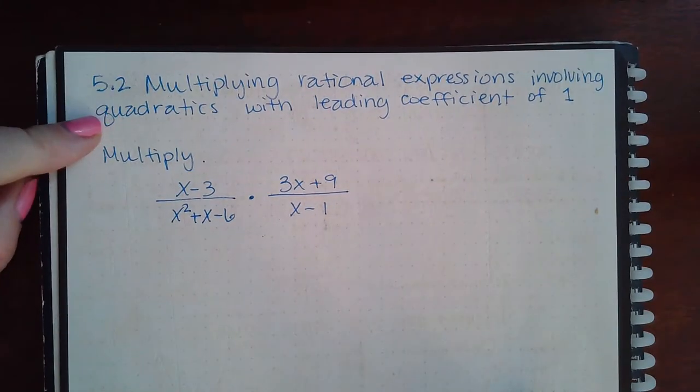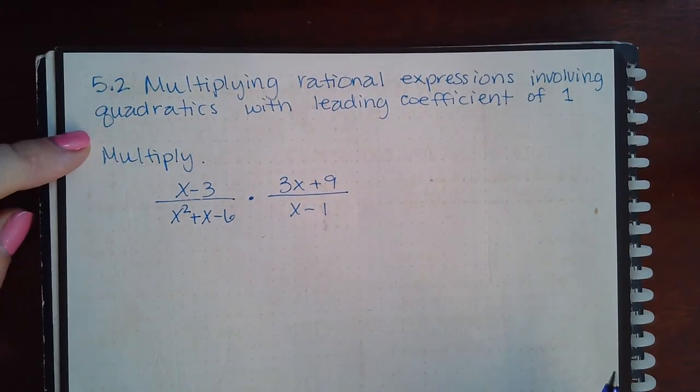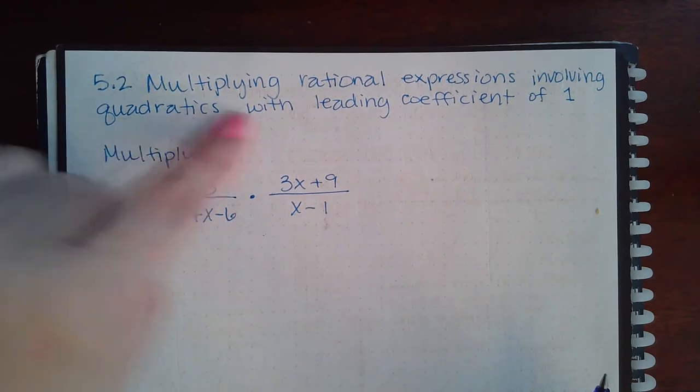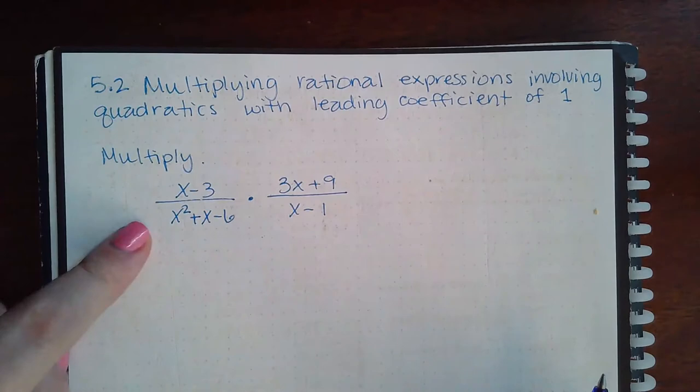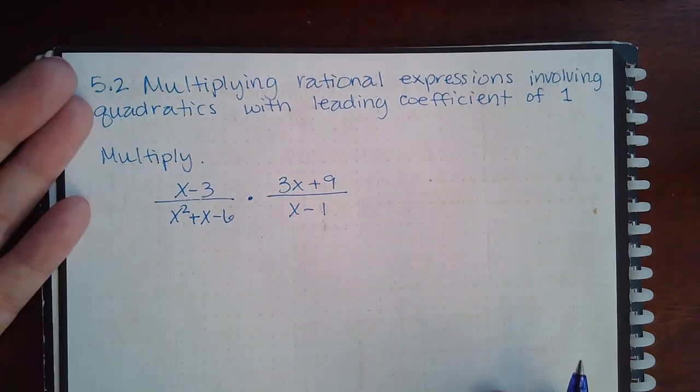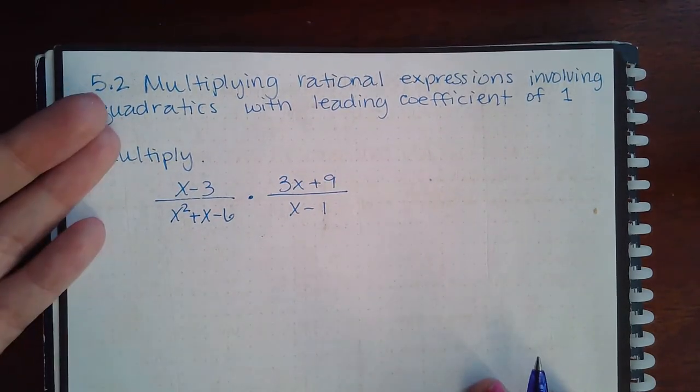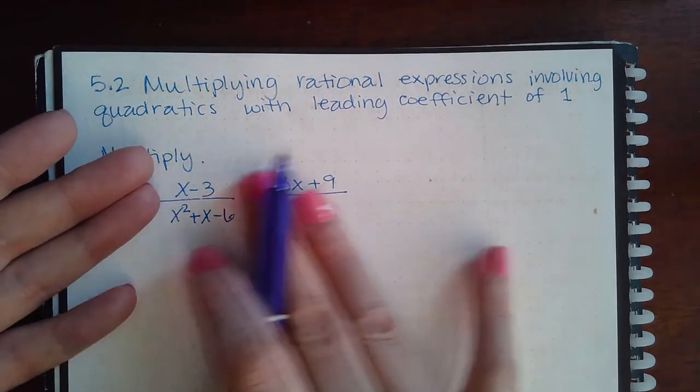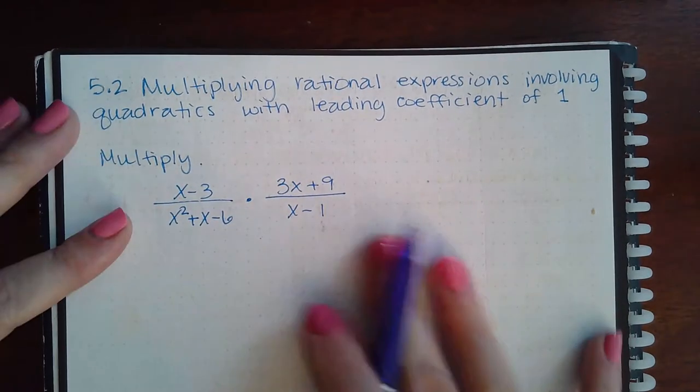Here we have 5.2 multiplying rational expressions involving quadratics with leading coefficient of 1. So here we're going to be doing the same thing as we do with reducing fractions. The only issue is that here the numerators and the denominators are not already factored.